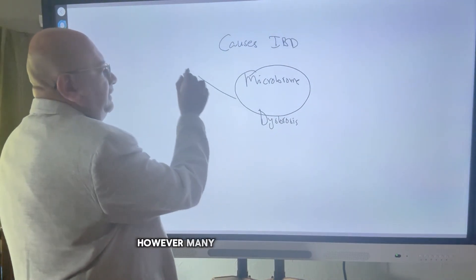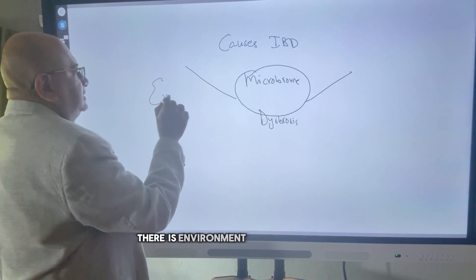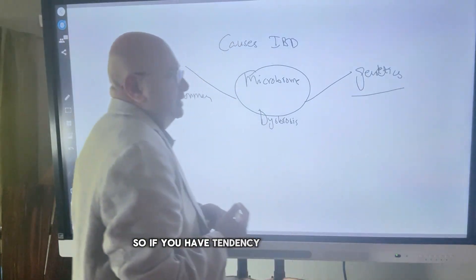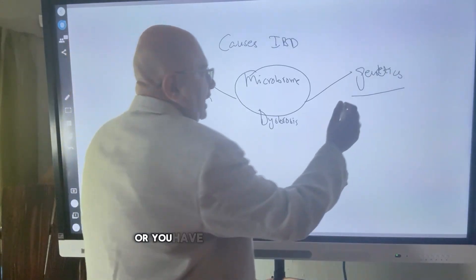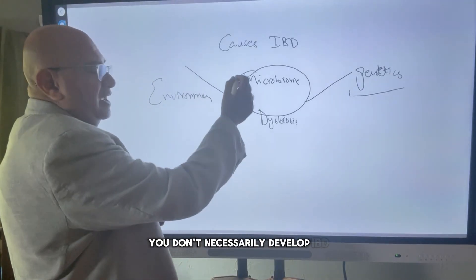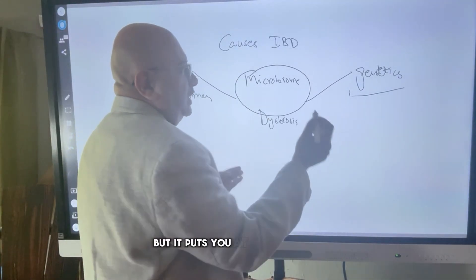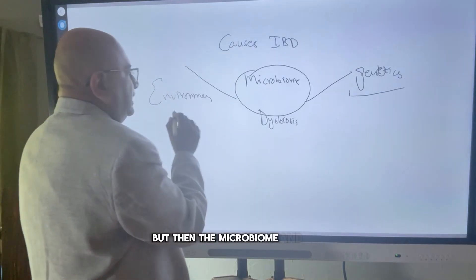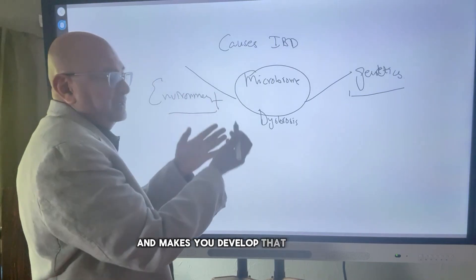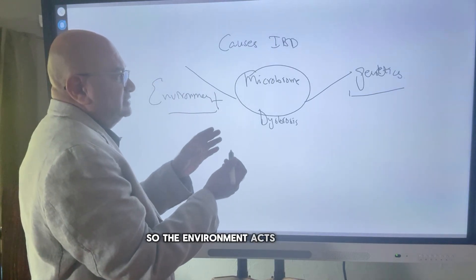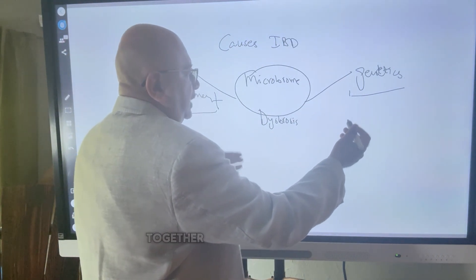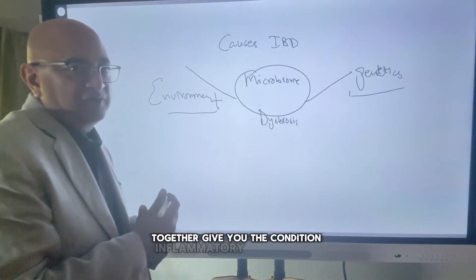However, many things play a role in it. There is environment and then there is genetics. So if you have a tendency or predilection, or you have genetics that puts you at high risk, you don't necessarily develop IBD, but it puts you at high risk. Then the microbiome and the environment change that process. The environment acts, your microbiome changes, and your genetics putting you at high risk together give you inflammatory bowel disease.